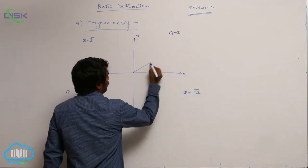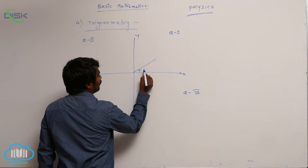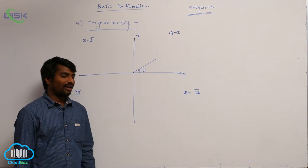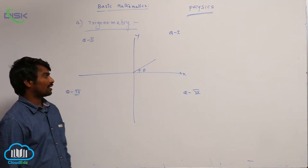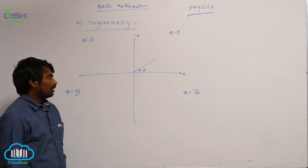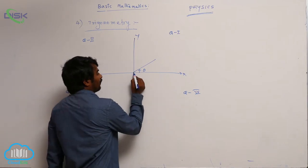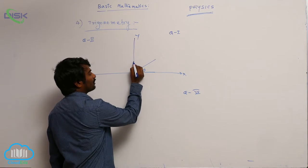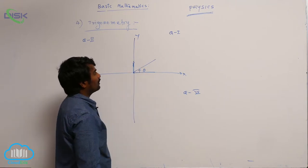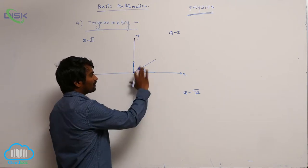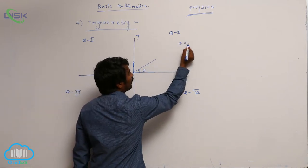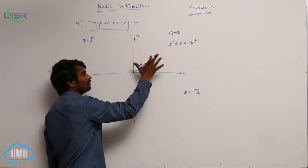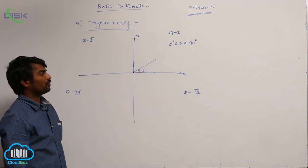Suppose you take a line that makes an angle theta with the x-axis. By convention, we consider the angle as anti-clockwise. If theta is 0, it is along the x-axis. If theta is 90 degrees, the line is along the y-axis. If it is between 0 and 90 degrees, then it falls in the first quadrant.